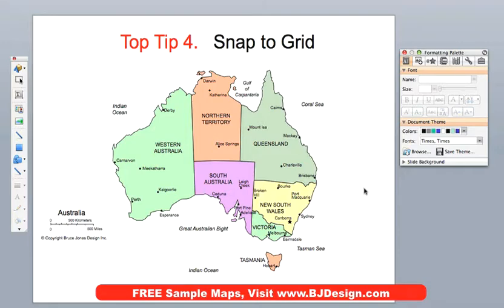When you open up a new PowerPoint presentation, there is an invisible grid underneath everything, and what that does is it allows you to line things up — line up boxes, text, and things. But when you're working with a map, it can drive you a little crazy.